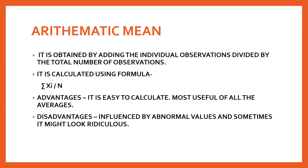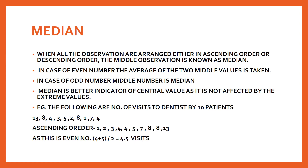The median is the middle observation when all observations are arranged in ascending or descending order. It is the middle value in the distribution such that one half of the units have a value smaller than or equal to the median, and one half have a value higher than or equal to the median. For example, the number of visits to the dentist by 10 people - since this is an even number, the process differs from odd numbers. First, arrange them in ascending order.